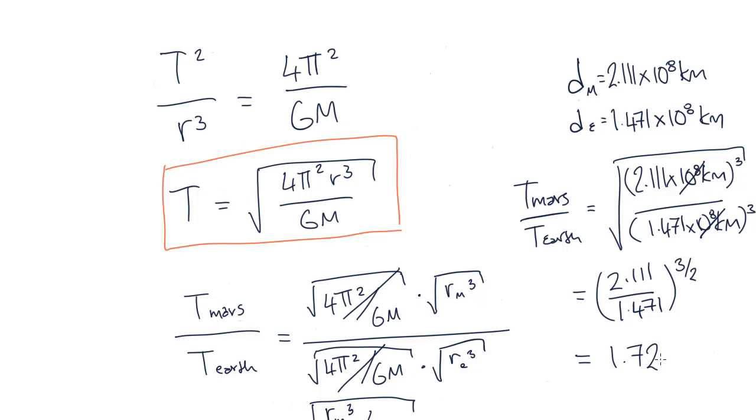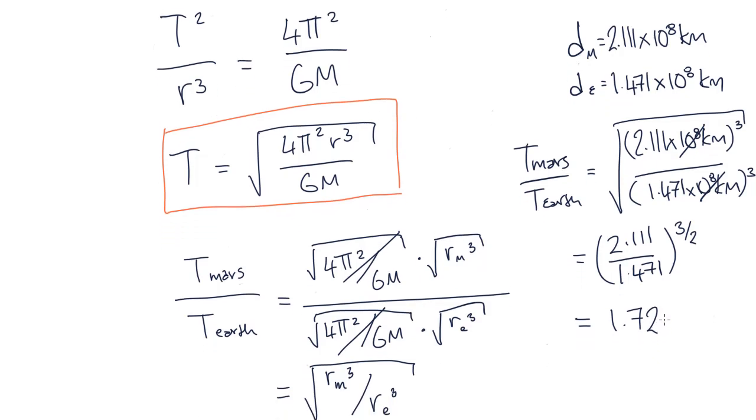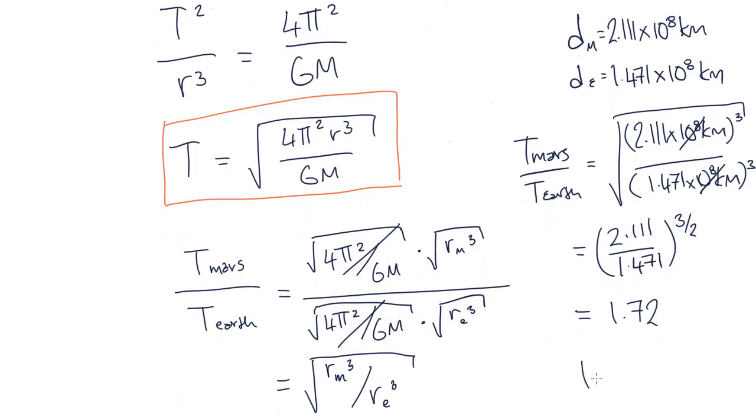Using this method, we found that the orbital period of Mars is equal to 1.72 times the period of Earth, which is very similar to our previous answer of 1.68.